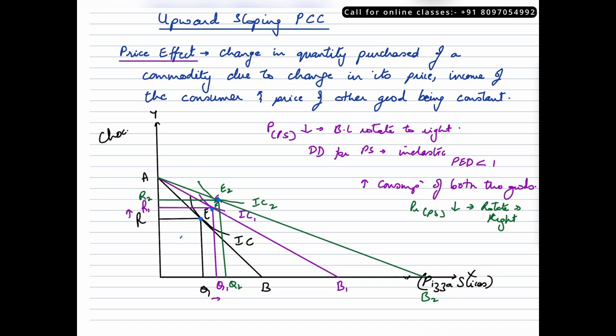Now if we are to join these points of equilibrium that I just highlighted in blue, I will get an upward sloping curve. This is an upward sloping PCC curve. Why is it an upward sloping curve? Because the demand for the commodity for which we saw a price fall is inelastic, that means the consumer is less sensitive to the price changes and hence he did not change his demand for this particular commodity despite a change in its price, and hence he increased his consumption for both the goods.